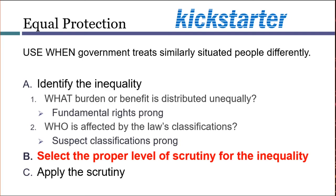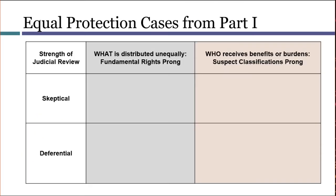In many situations, knowing which level of scrutiny to apply can be pretty easy, because the answer is clearly announced by precedent. For right now, let's assume that there are only two levels of scrutiny — lower and higher. Within that framework, we have some examples from Part 1 of the book.